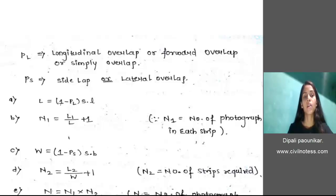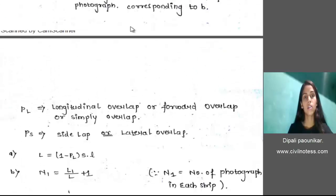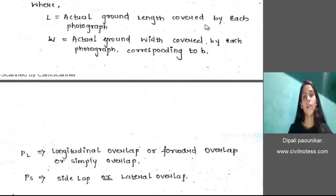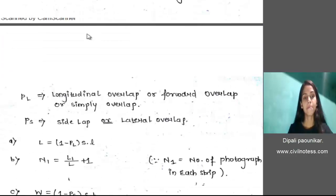This L denotes the actual ground length covered by each photograph, and PL is longitudinal overlap, forward overlap, or simply overlap. S is the scale of photograph and small l is the length of photograph.